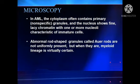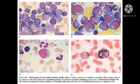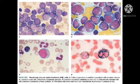In AML microscopy, we see predominantly myeloblasts — more than 20%. The cytoplasm of myeloblasts contains primary non-specific pink granules, and the nuclei show fine lacy chromatin with one or more nucleoli. Abnormal rod-shaped granules called Auer rods will be seen. In picture A you can see myeloblasts; in picture B there is a single myeloblast in the center with an Auer rod in the cytoplasm and two white punched-out nucleoli.